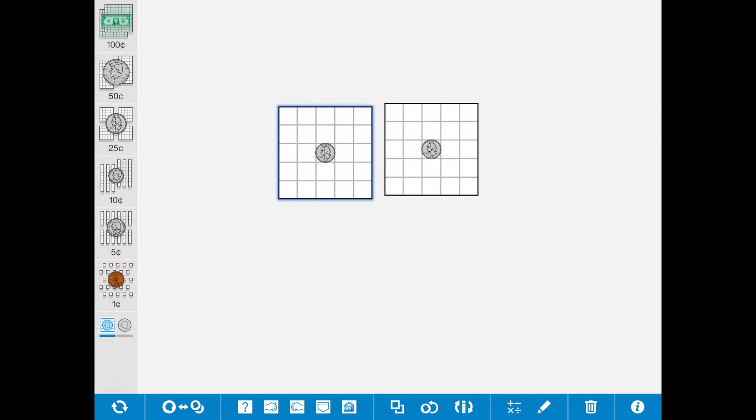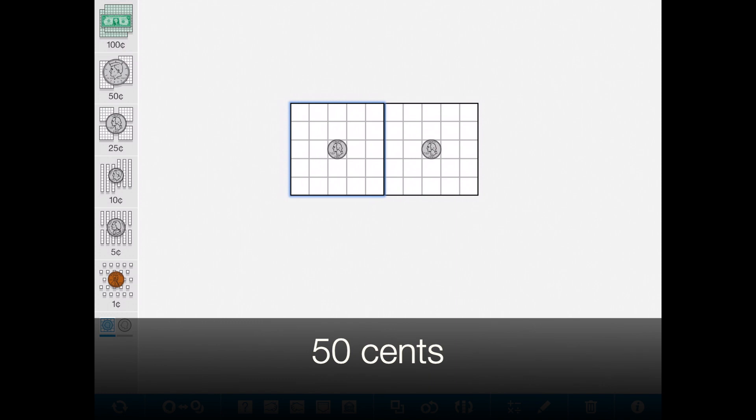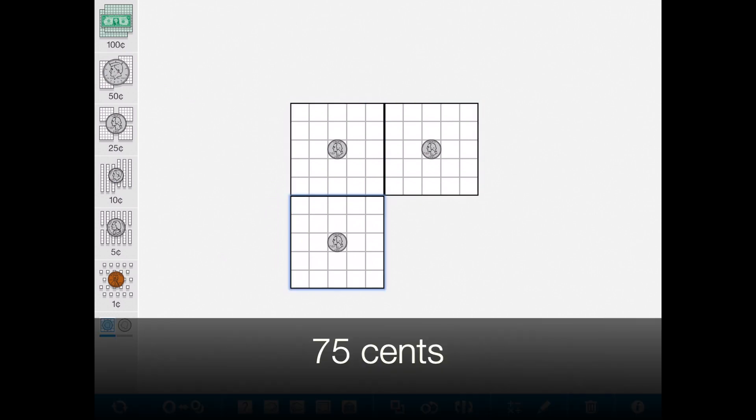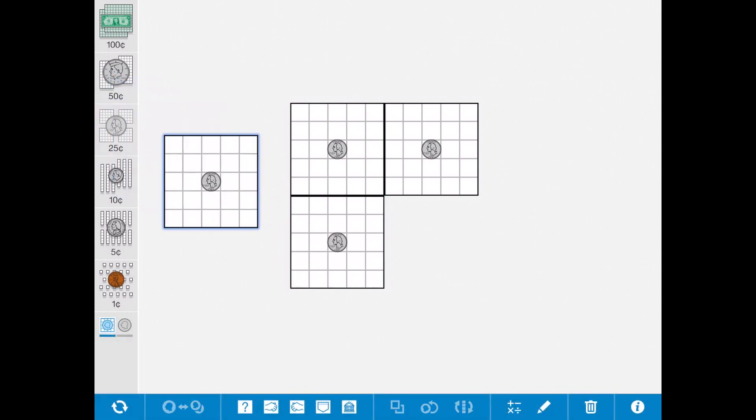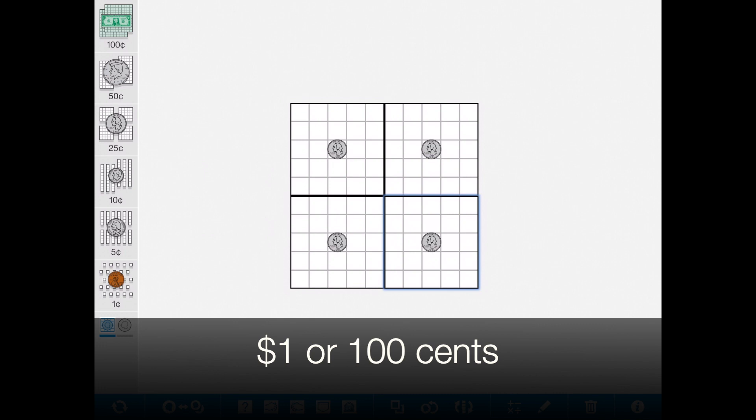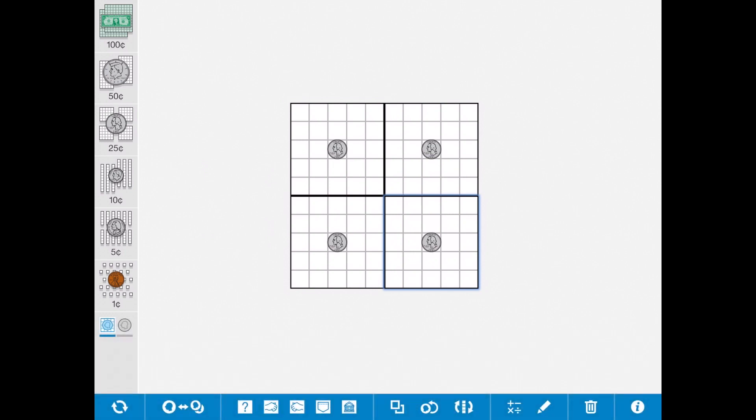Remember that a quarter is a quarter of a dollar. It is worth twenty-five cents. So, if I have two of them, it is worth fifty cents. If I get another one, so again, twenty-five plus twenty-five plus twenty-five is seventy-five cents. If I add one more, twenty-five plus twenty-five plus twenty-five plus twenty-five, that equals one dollar, or one hundred cents.